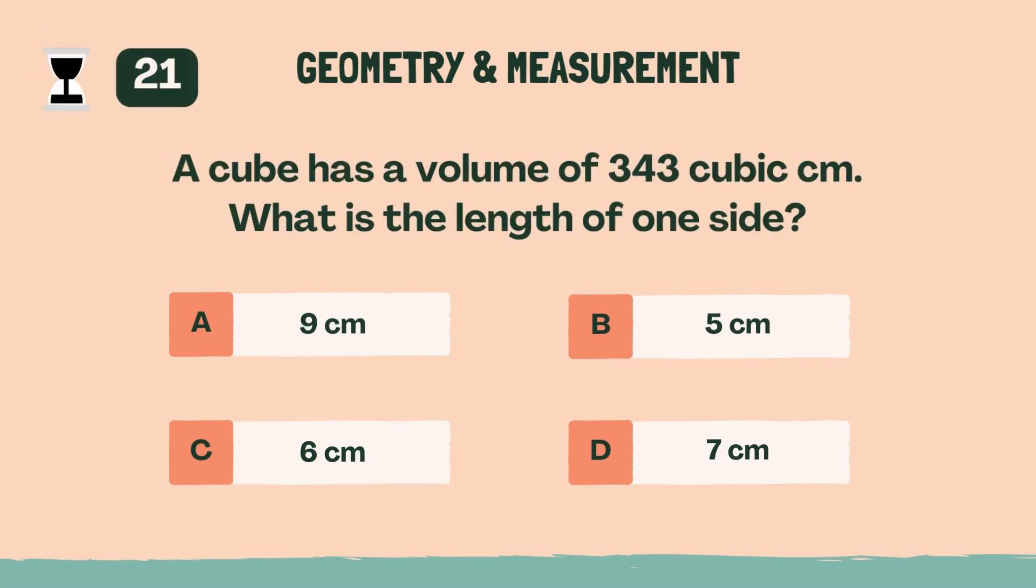A cube has a volume of 343 cubic centimeters. What is the length of one side? D, 7 centimeters.